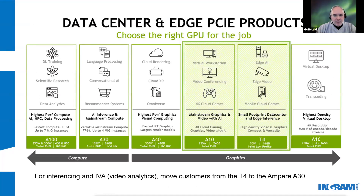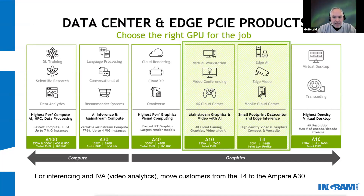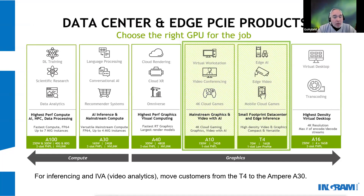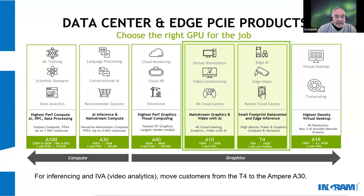The Ampere line of GPUs from NVIDIA are the current standard family of GPUs. The Ampere GPUs all start with the letter A and cover an assortment of use cases as seen here. Typically, the A30 and above are used in compute-intensive applications such as high-performance computing and artificial intelligence. Lower models such as the A6, A10, and A2 are positioned for use in virtual desktops or virtual workstations. The exception is the A40, which is intended as a high-end option for supporting virtual workstation graphics.